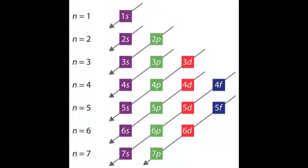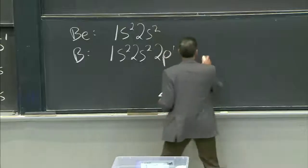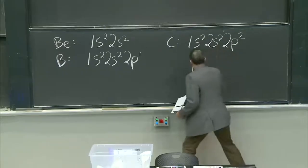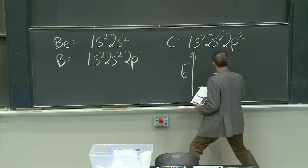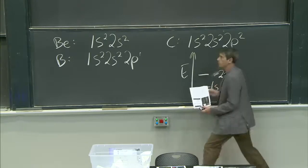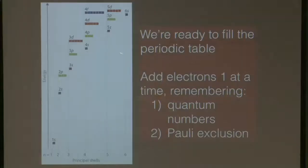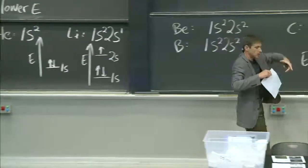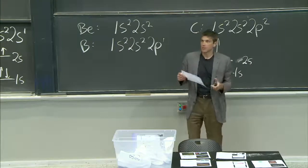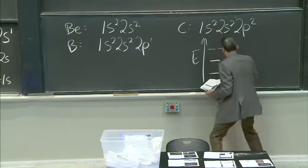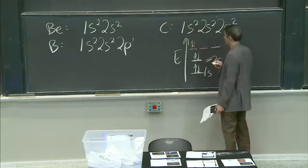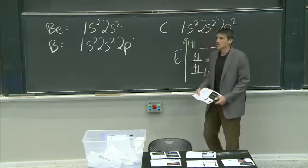Now we get to carbon, and we have to think about this. For carbon, I've got 1s²2s²2p². That is correct. But if I think about this in energy terms, the 2p can take six electrons because m_l can vary from −1, 0, +1, corresponding to three different orientations of the p orbital. So I can fill two into the first sub-orbital and then the question is — do I pair them up? Somebody says no.